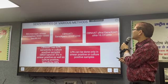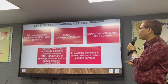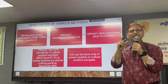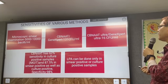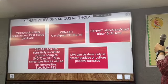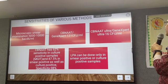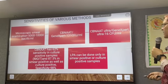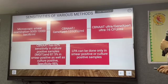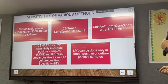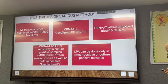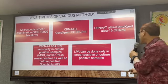Regarding the sensitivity of various diagnostic methods: microscopic smear will be positive only if there are 5,000 to 10,000 bacilli per ml of sample. CBNAT can detect as low as 131 CFU per ml. Ultra CBNAT will be positive even if there are only 16 CFU per ml. CBNAT has only 62% sensitivity in culture-positive samples such as MGIT, and 87.5% if the sample is both smear-positive and culture-positive. LPA — line probe assay — can be done only in smear-positive or culture-positive samples.